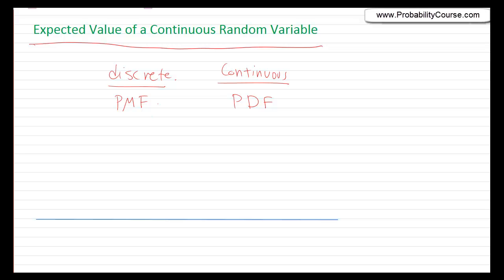If you have a formula and it includes a probability mass function, you just replace the probability mass function by the probability density function, and if your formula has a summation, you replace the sum by an integral. There is more to it, but this is a very useful method to find similar formulas for continuous random variables.